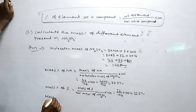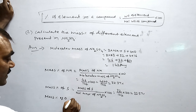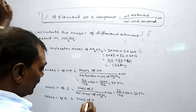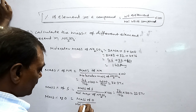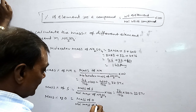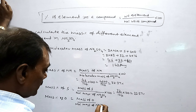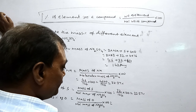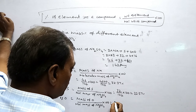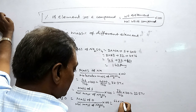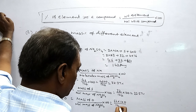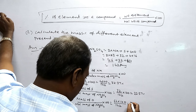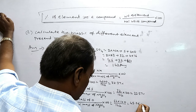Mass percent of oxygen equals mass of oxygen by molecular mass of Na2SO4 into 100. Mass of oxygen is 64. So 64 into 100 by 142 gives approximately 45.07 percent.